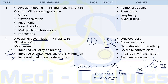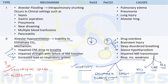Treatment of Type 2 respiratory failure: first and foremost, treat the underlying cause. For supportive management, non-invasive positive pressure ventilation with a tight facial mask is used. Mechanical ventilation should be avoided due to high risk of mortality. Non-invasive positive pressure ventilation is especially useful in acute exacerbations of COPD.